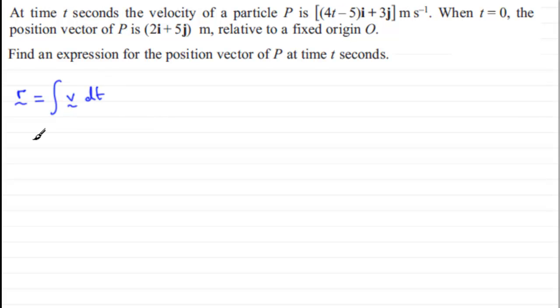And so we've got our velocity vector here. So if we integrate this, we'll just put it in first of all. We've got 4t minus 5 in the i-direction, and then we've got plus 3j.